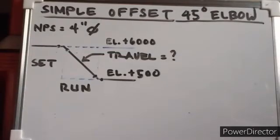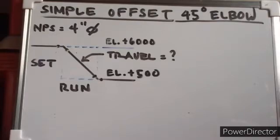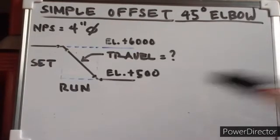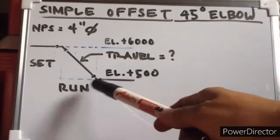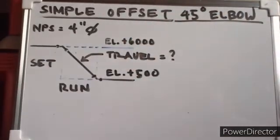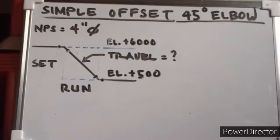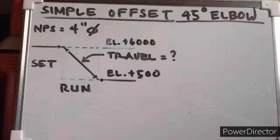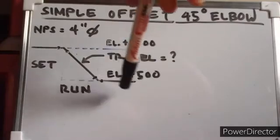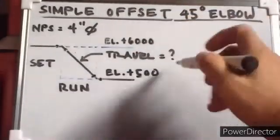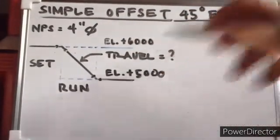Next example, we have here a simple offset 45 degree elbow. Our elbow will be only 45 degrees — both elbows will be 45 degrees. I have here a given: the first elevation is 6,000 and the down elevation is 5,000.